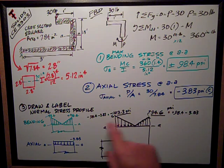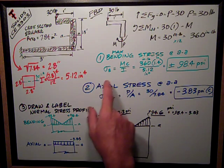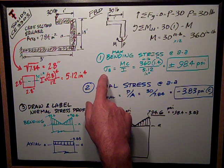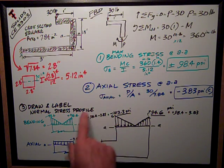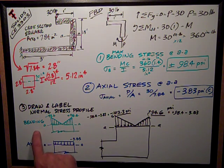The last question was draw and label the normal stress profile. Well, the normal stresses are the sigma bending. Sigma is the symbol for normal stress, and so this is what we wanted. We wanted to combine. The problem was called combined loading.